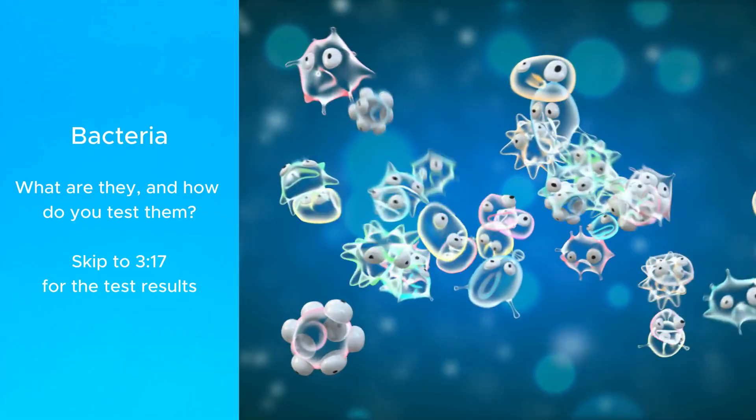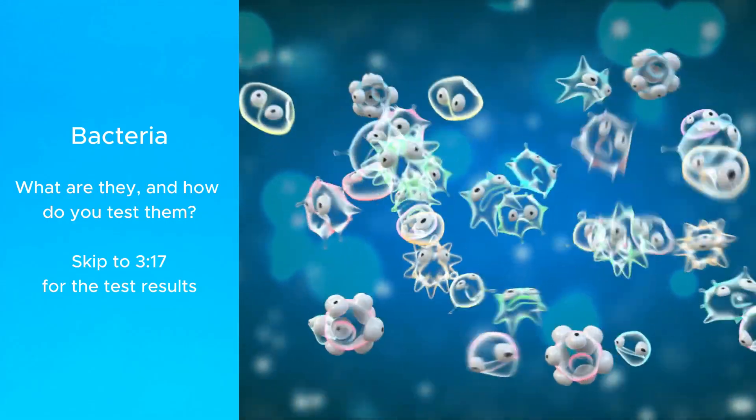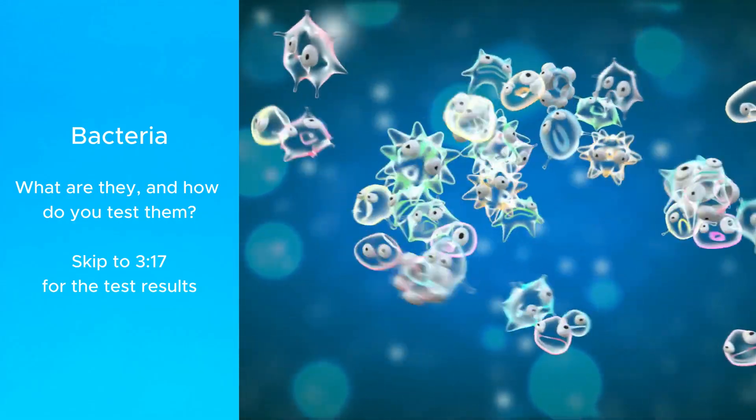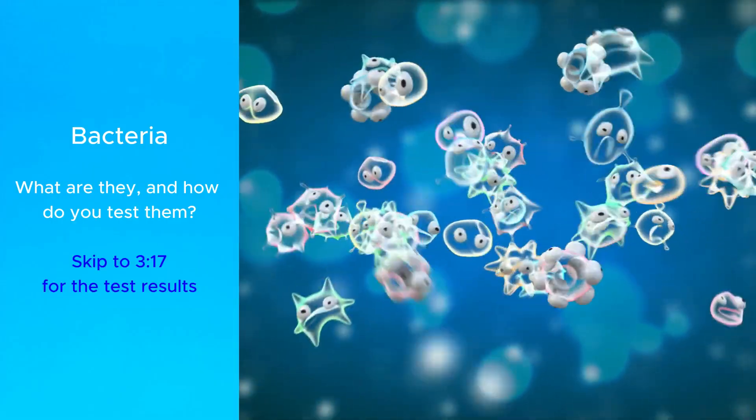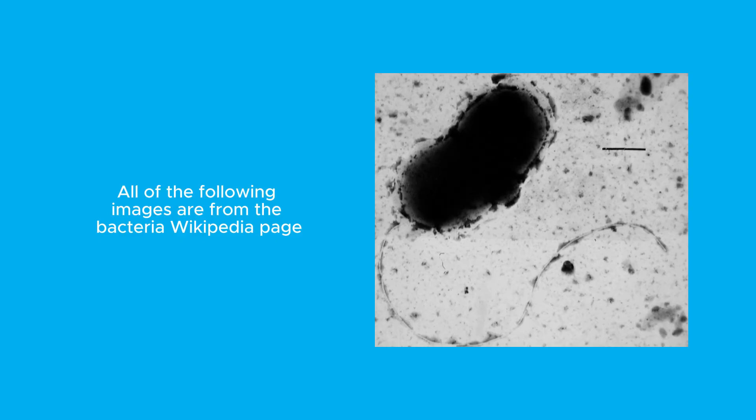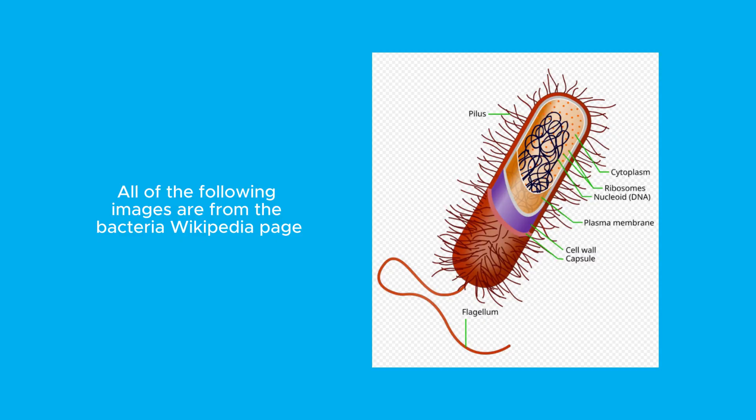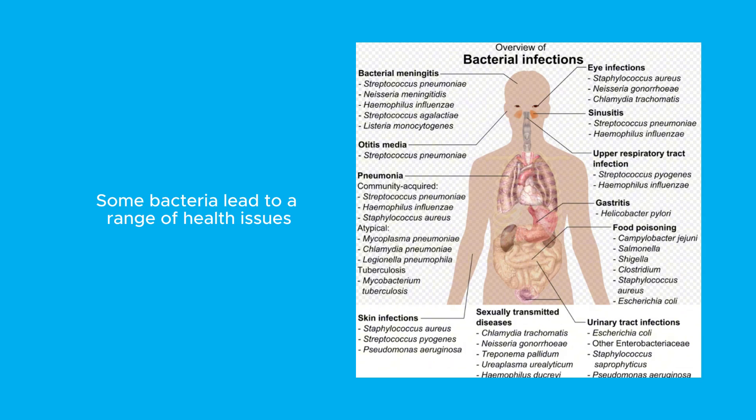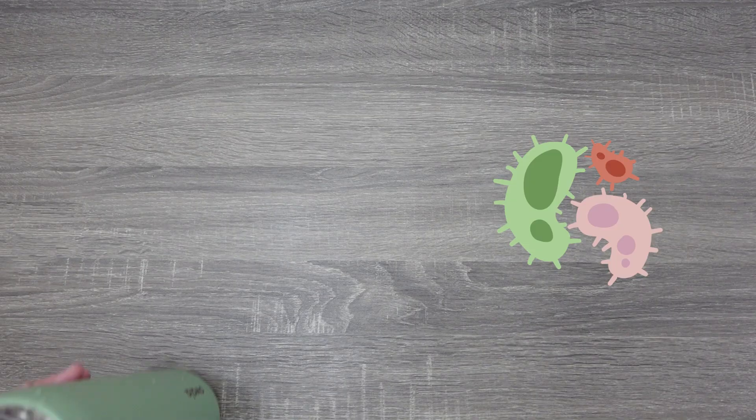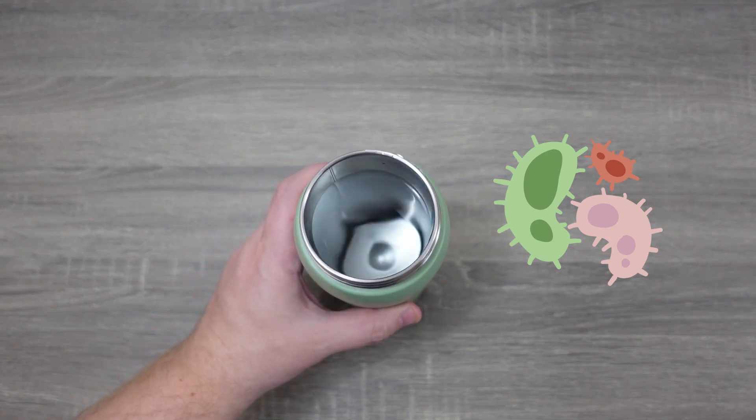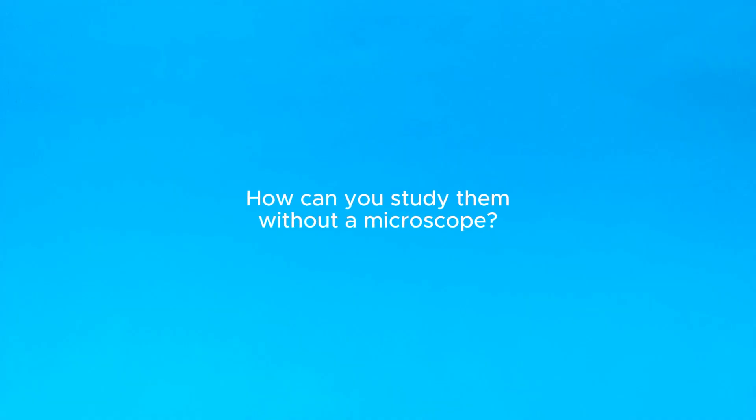Now before we look at the results, let's do a little biology refresher because that can give you some context for what you're about to see. To go straight to the test results, you can skip to this point in the video. Bacteria are very small organisms found pretty much everywhere in nature and in you. Some of them are good, but others can be bad and lead to health issues. The problem is, they're too small to see on their own without a microscope, so they could easily be hiding and living the good life in your water bottle without you even knowing it.